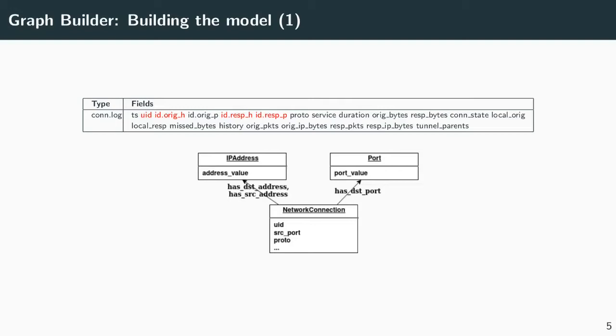Our graph model is centered on a principal class called network connection. This class is built from the conn.log log files. The fields of this type of event are written on the top. From these fields, we extract the UID representing the identifier of one connection, the source IP address, the destination IP address, and the destination port. These elements can directly link two events or be linked with external pieces of information. On the contrary, the source port is often set dynamically and is not often representative of any link between two elements. Therefore, we keep this piece of information in the network connection class.